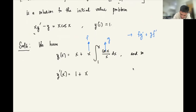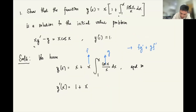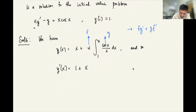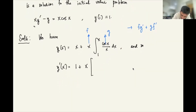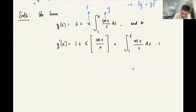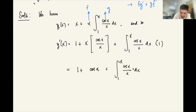Applying the product rule: copy f (which is x), and take the derivative of g. Since this is a definite integral and the antiderivative, the integral sign disappears, giving cosine(x)/x. Then copy g and multiply by f' which is 1. So y' simplifies to 1 plus cosine(x) plus the integral of cosine(x)/x dx from 1 to x.